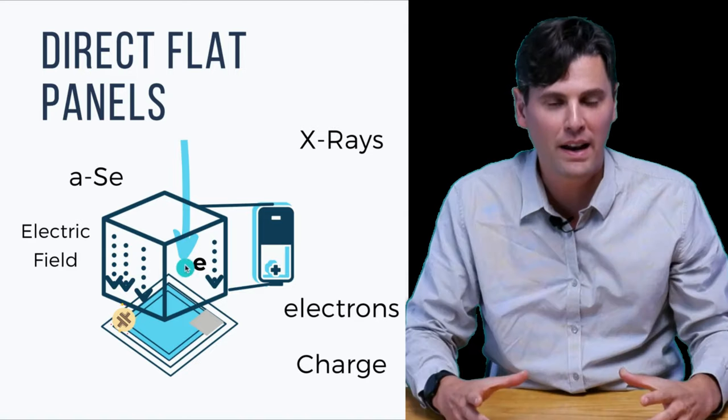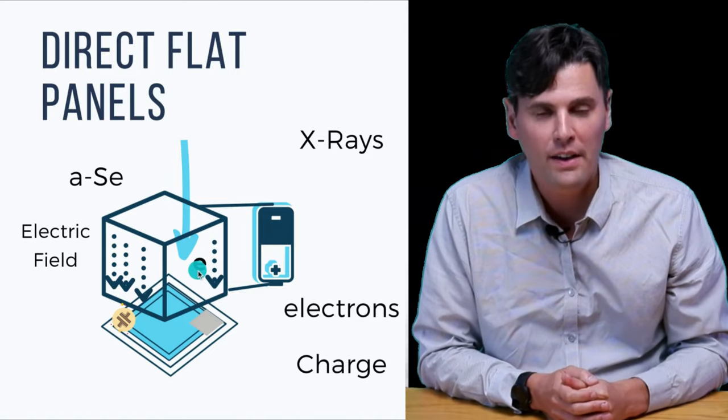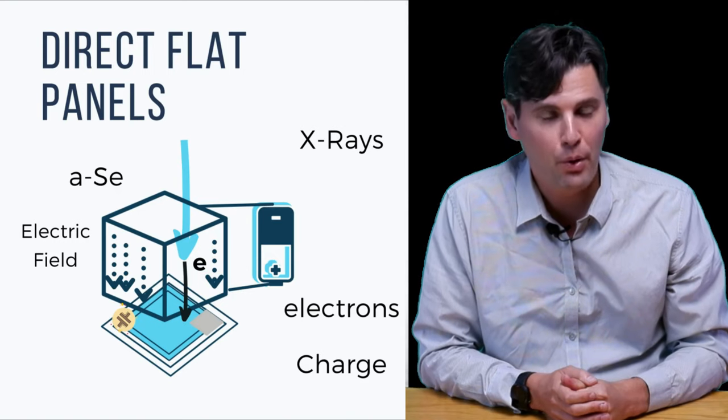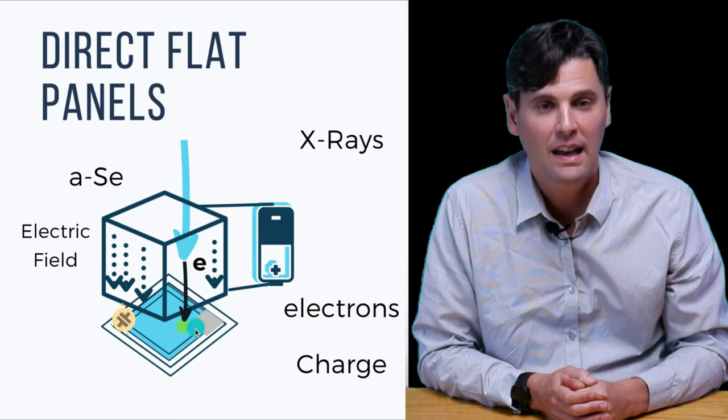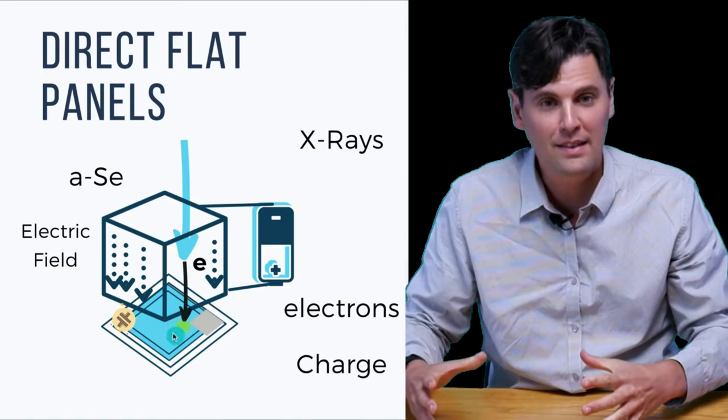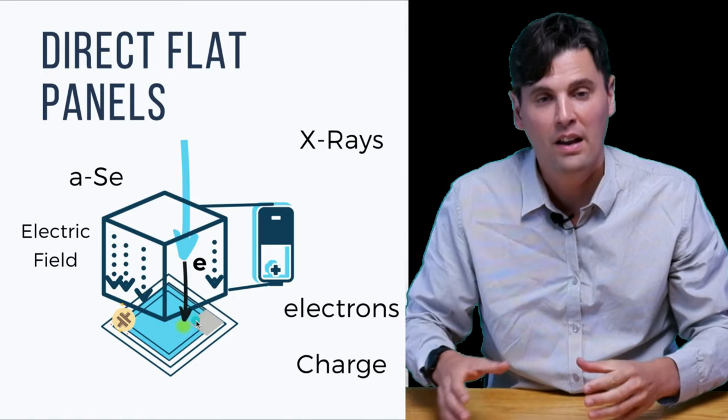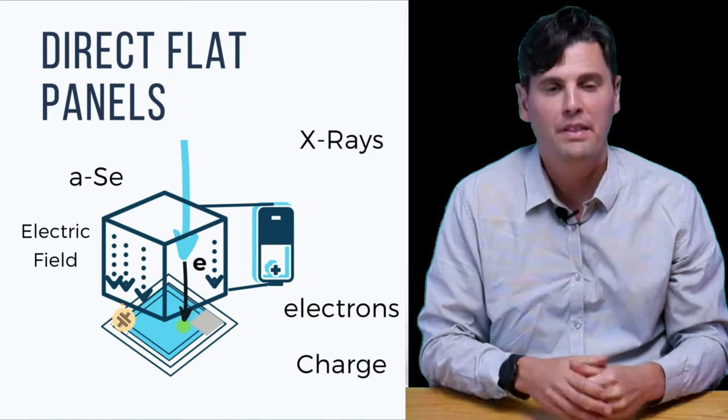The major advantage of direct DR flat panels is higher spatial resolution. The electrons coming down are pulled relatively directly and don't spread out, whereas light photons spread out in both the cesium iodide and gadox cases — less so with cesium iodide, but spreading still occurs. The direct panel has the clear advantage in spatial resolution because of minimal electron spreading.